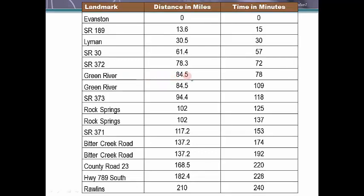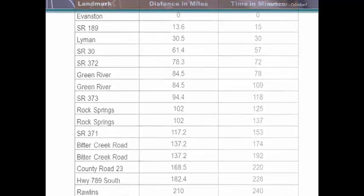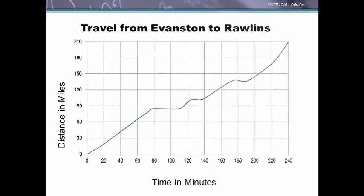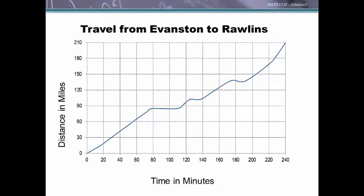For example, in Green River you've gone 84.5 miles in 78 minutes, and you still hadn't gone any further at 109 minutes — that's because you stopped for lunch. So you get a better sense of what was going on with your velocity at different times. Even more informative is plotting this on a graph, where you can see the flat portion while stopped for lunch in Green River, Rock Springs, and the stop out in the middle of nowhere.